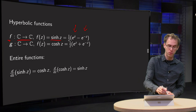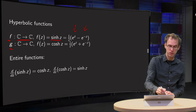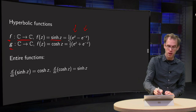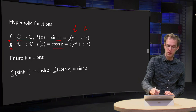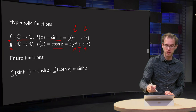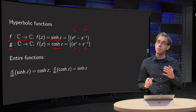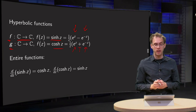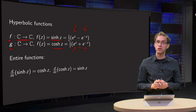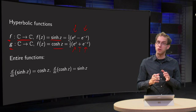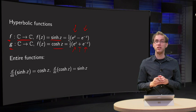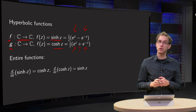And similarly for the cosine hyperbolic g: cosine hyperbolic of z equals e to the power of z plus e to the power of minus z, all divided by two. They are entire functions, because they are a combination of exponentials.